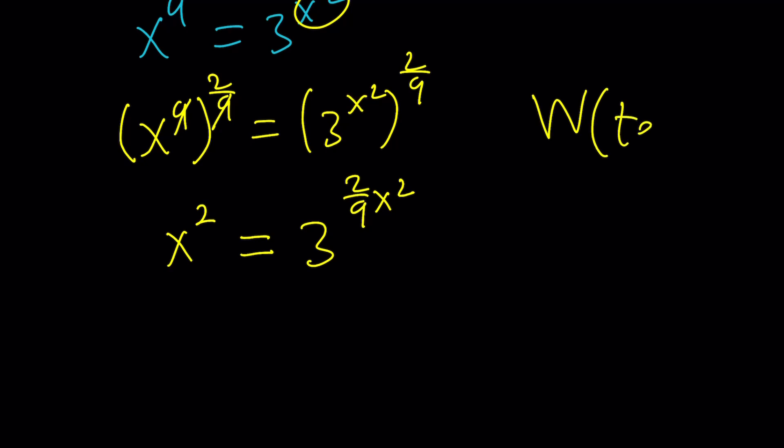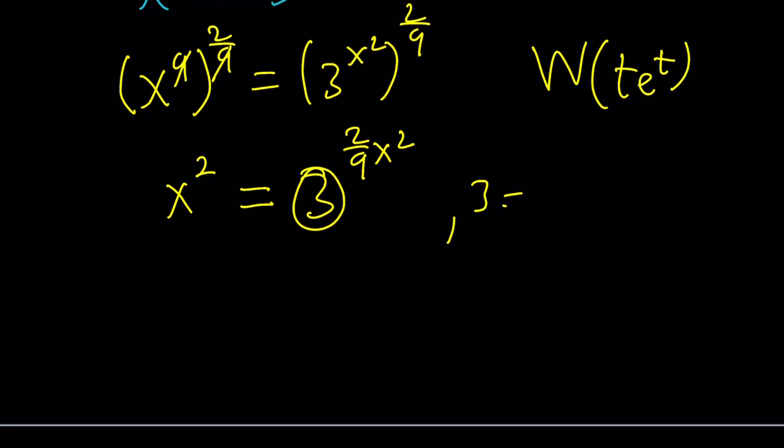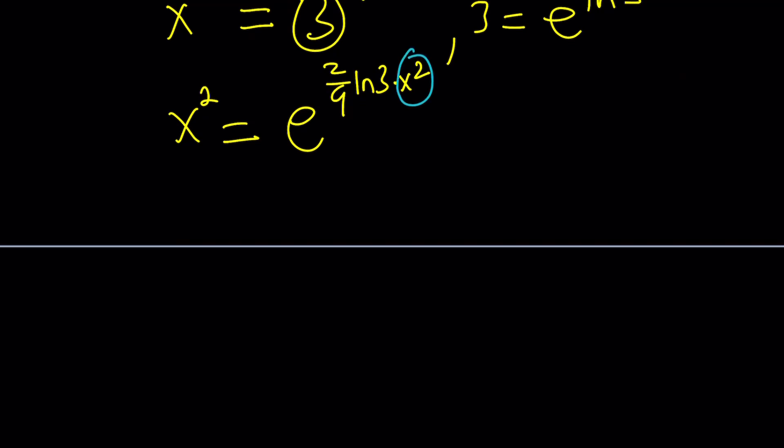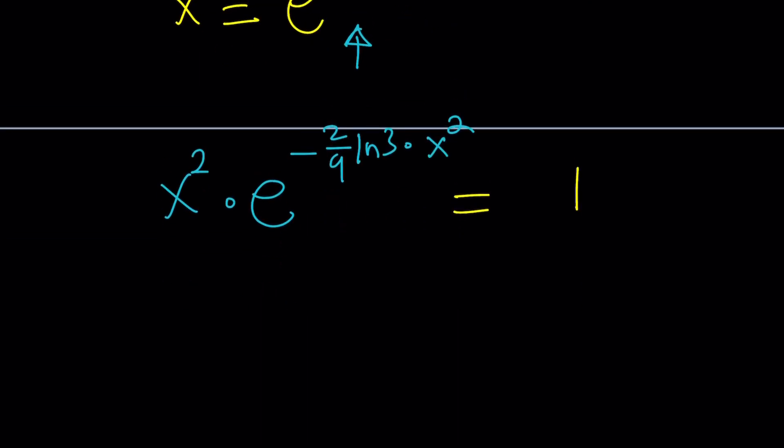3 can be written as e to the power ln 3. If you plug it in, this is going to be e to the power 2 over 9 ln 3 times x squared. And this is just going to be x squared. Notice that we have an x squared here. We have our T, but the whole thing is T. So I'm going to multiply both sides by the reciprocal of this. x squared times e to the power negative 2 over 9 ln 3 times x squared. And all we need is negative 2 over 9 ln 3 on both sides. This is equal to 1 because the reciprocals multiplied gives us 1. And now I'm going to multiply both sides by negative 2 over 9 ln 3. That'll do the trick.